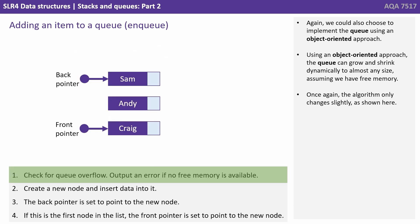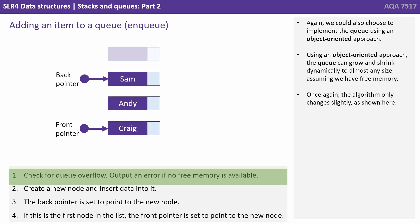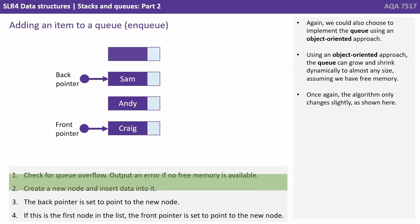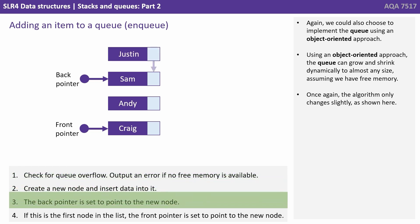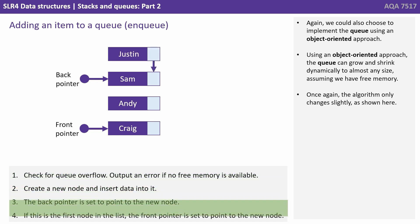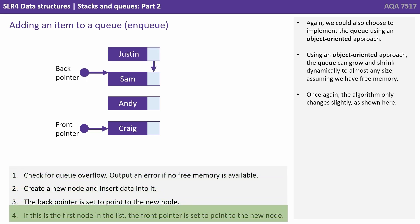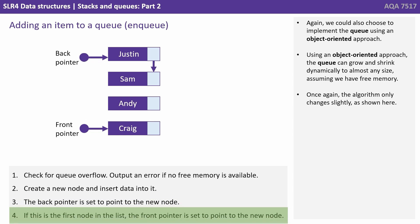We could also choose to implement the queue using an object-oriented approach. Using this approach, the queue can grow and shrink dynamically to almost any size assuming we have free memory, and the algorithm only changes very slightly.